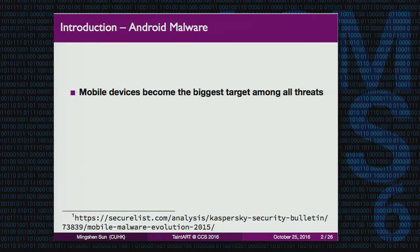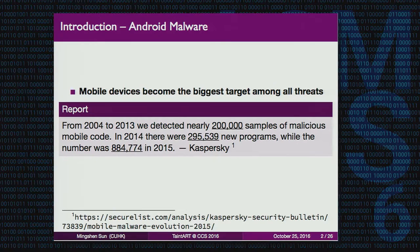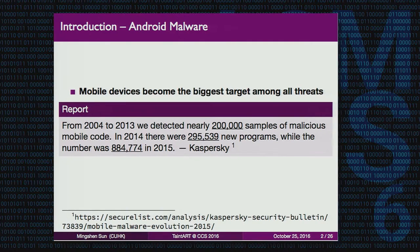Before we go into detail, let's see some current status of Android malware. As we all know, mobile devices have become the biggest target among all threats. There are a lot of sessions about mobile security and Android security at CCS. A recent report from Kowalski from 2014 to 2016 detected nearly 200,000 samples of malicious mobile codes. In 2014, there were about 300,000 new threats, and last year it was about 800,000 samples, with an increasing number of mobile devices in the world.